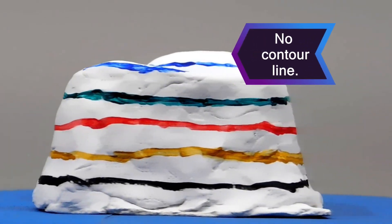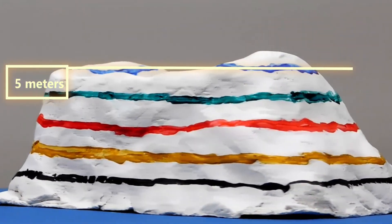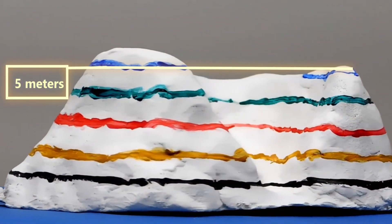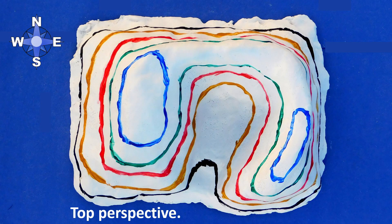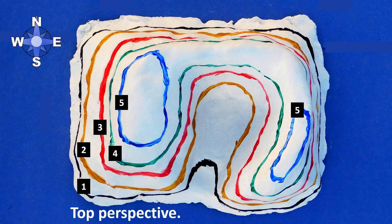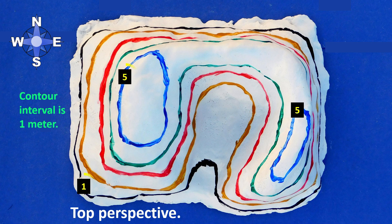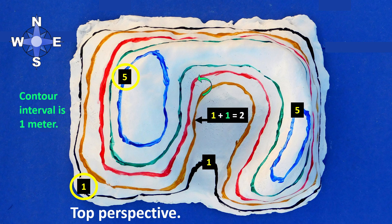Oftentimes, the top of a hill or mountain doesn't have a contour line. That's because its peak may have a value greater than the highest value of an adjacent contour line, but less than where the next contour line would be. Maps show land from a top perspective, so a map of contour lines of this model would look like this. The number on the contour lines stands for the elevation above sea level. We usually don't write the units on contour lines, but in this case we know the units are meters. To avoid clutter, many maps will only have the elevation written on some contour lines. If contour lines without numbers are between contour lines that do have numbers, we can calculate their values by using the contour interval.